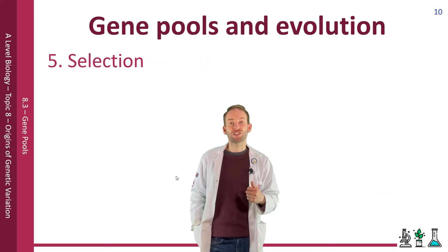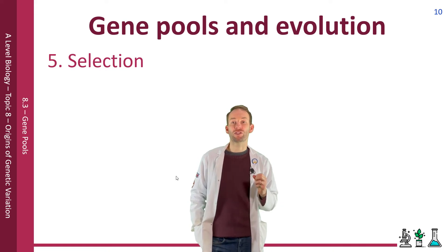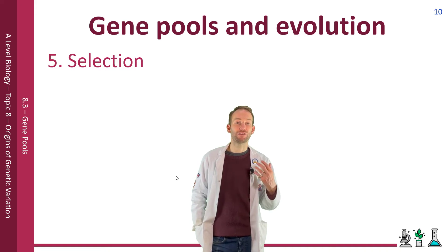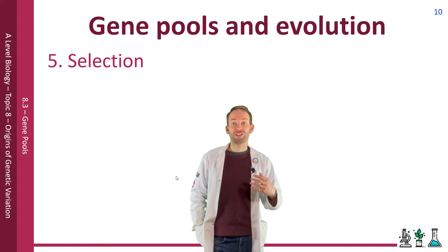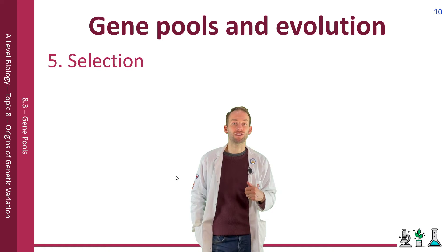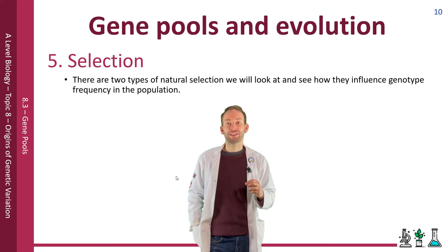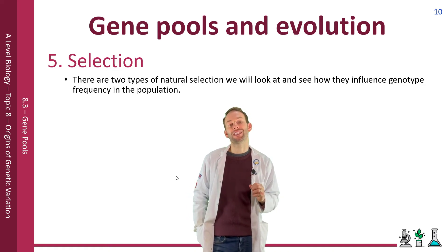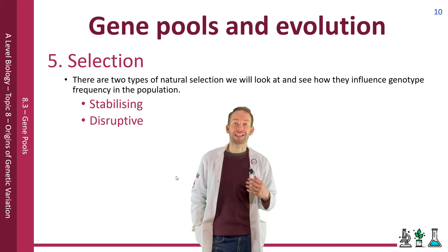Natural selection is the fifth disturbing factor. The environment essentially selects which individuals survive, and therefore which genes get passed on and how a species evolves. We call these factors in the environment selection pressures. Animals also select each other sexually due to specific traits — these are both examples of selection: sexual selection and natural selection. There are two types of natural selection we will look at: stabilising natural selection and disruptive natural selection.